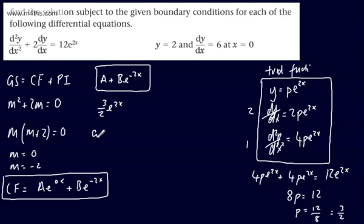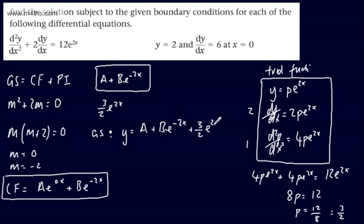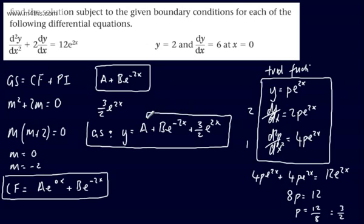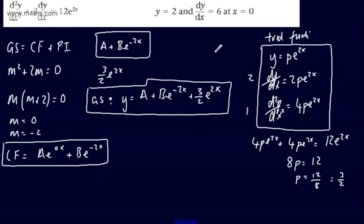So the general solution is y = a + be^(-2x) + (3/2)e^(2x), where a and b are arbitrary constants. We can find the values of these constants by using the initial or boundary conditions. We've been given the boundary conditions y = 2, dy/dx = 6, and x = 0.